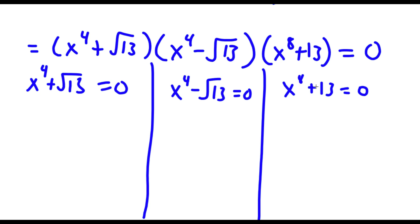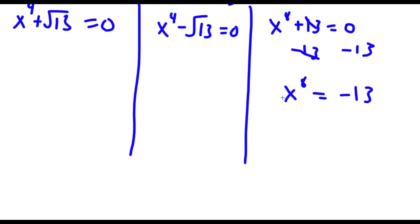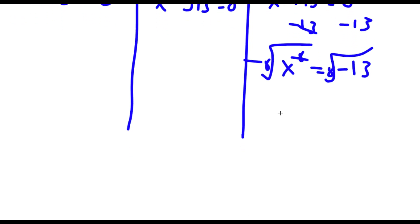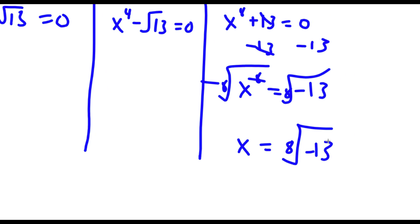For x to the power of 8 plus 13 equals 0, subtract 13 on both sides — these two cancel out and we're left with x to the power of 8 equals negative 13. If I take the 8th root on both sides, I'm left with x equals the 8th root of negative 13. But you can't take an even root on a negative number, so this is wrong.